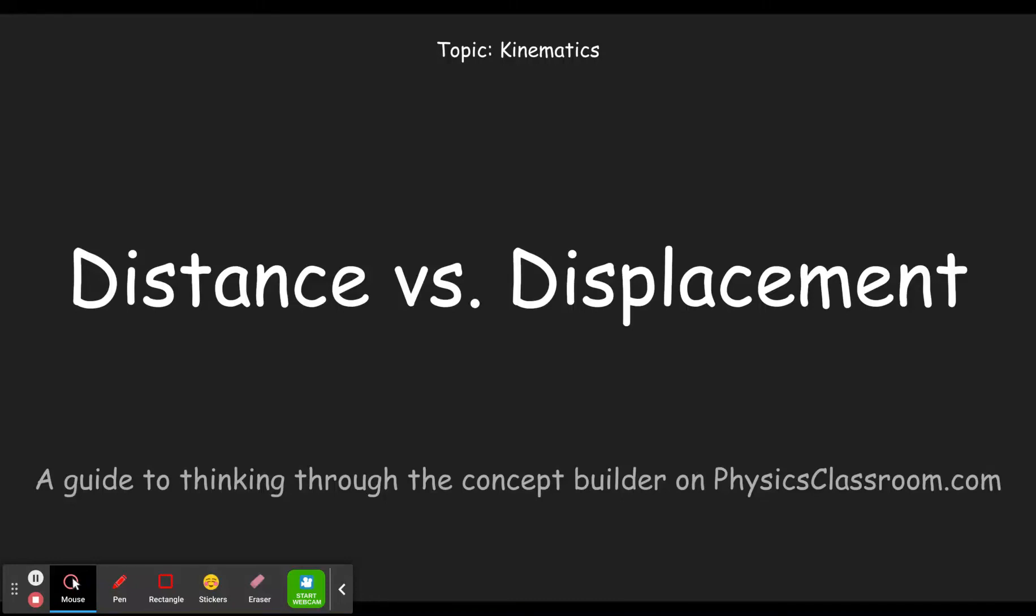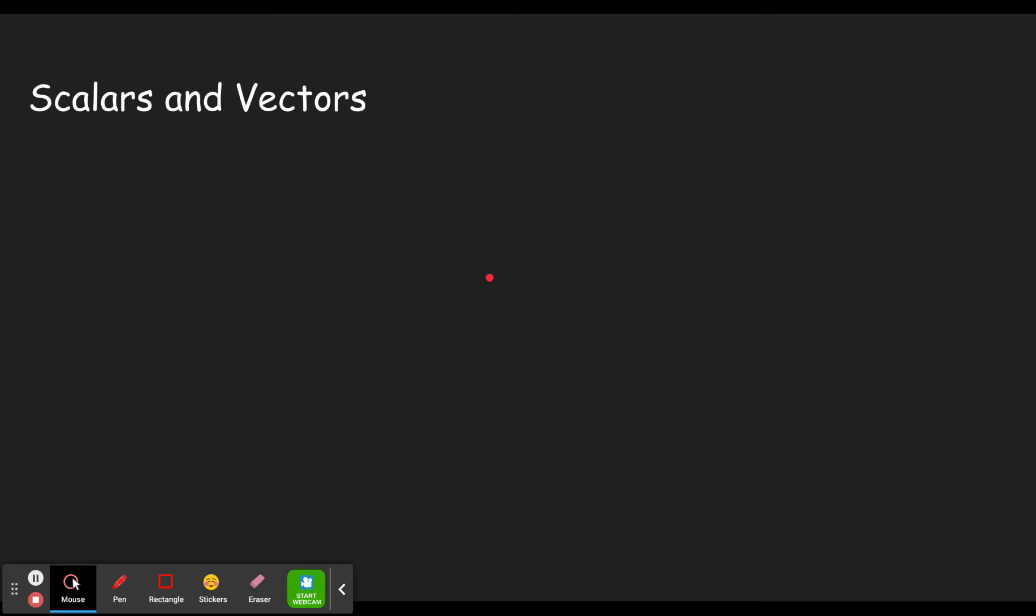Hello and welcome to the scientific invention of Beardman. Today we're going to be looking at a concept builder on physicsclassroom.com and the topic of kinematics. The title is distance versus displacement. Often when you see versus, you're looking at graphing. That's not the case here. We're looking at the difference between the two, and that difference comes down to the fact that one is a scalar and one is a vector.